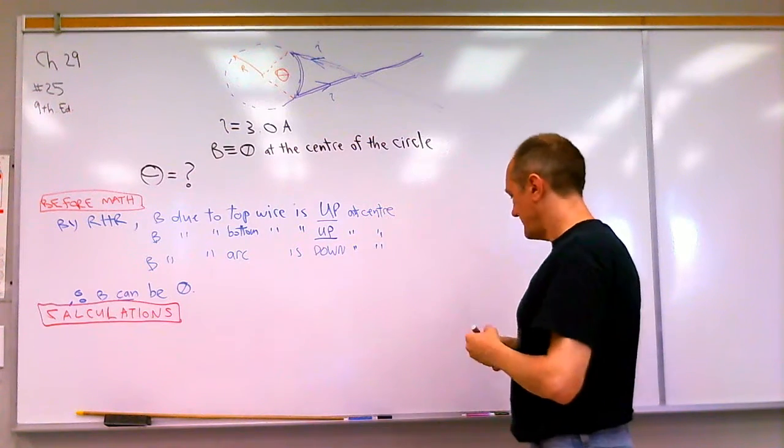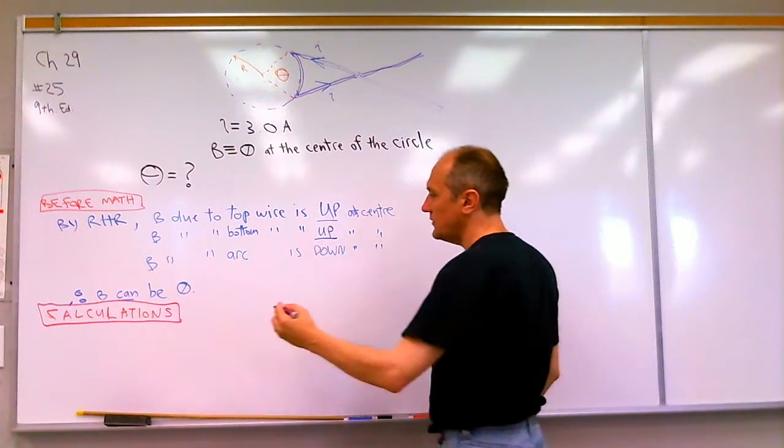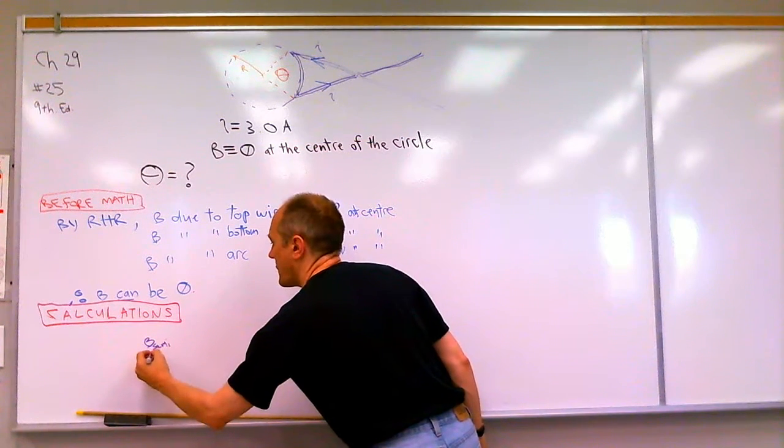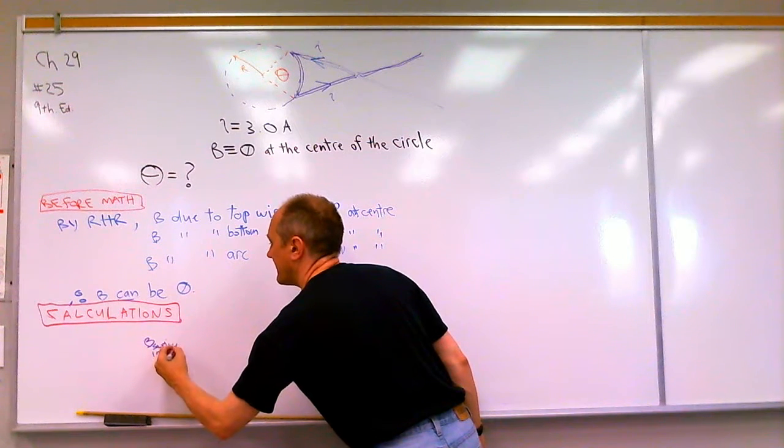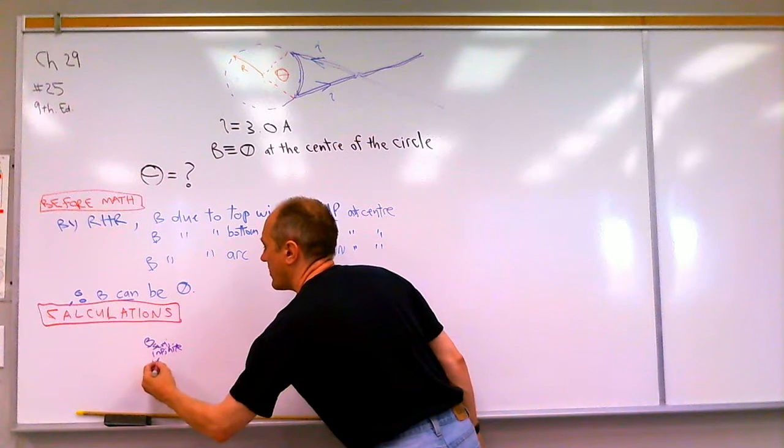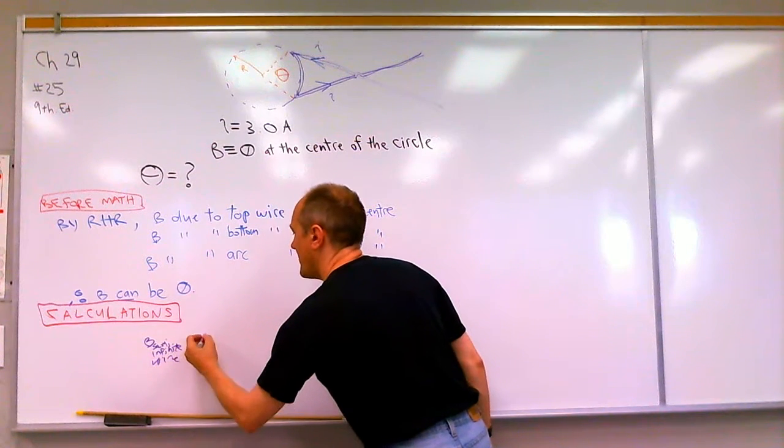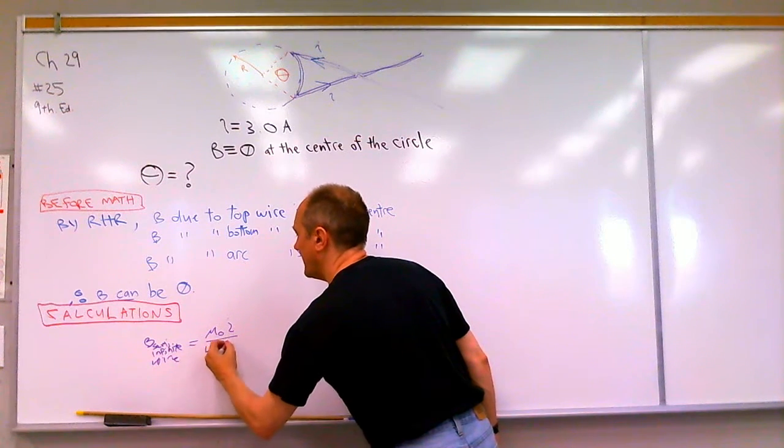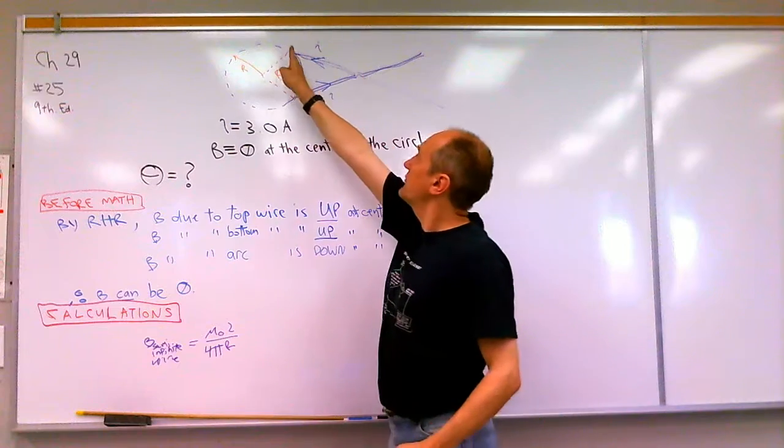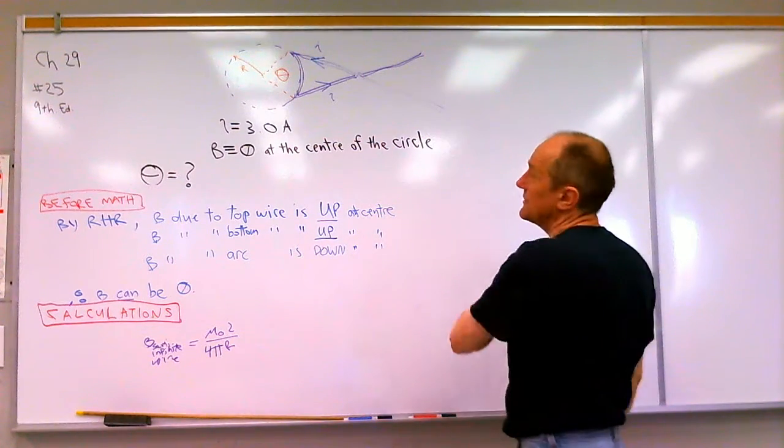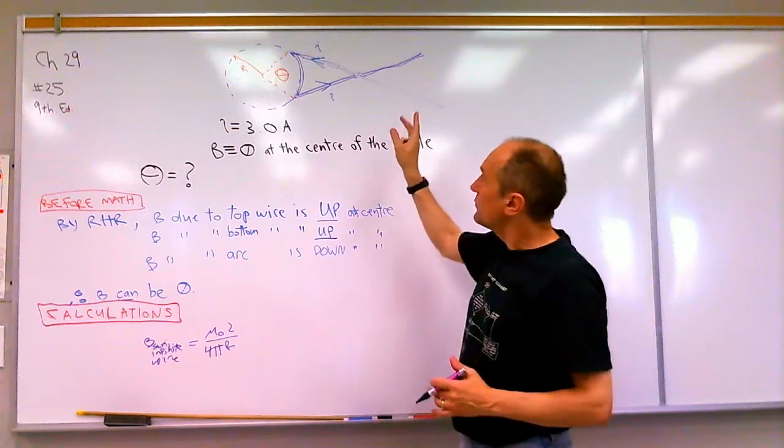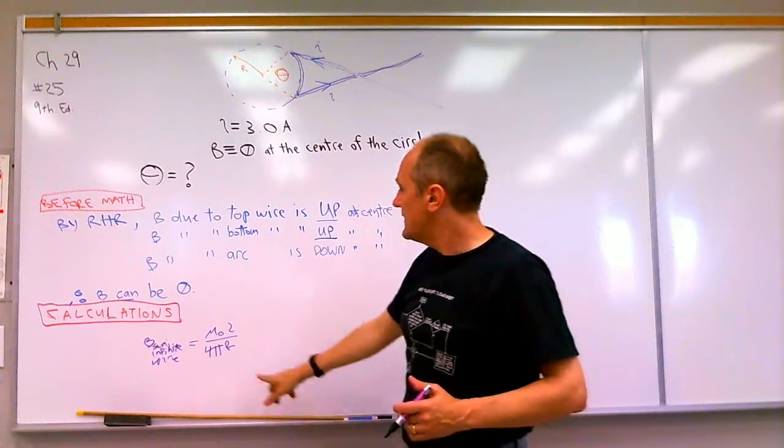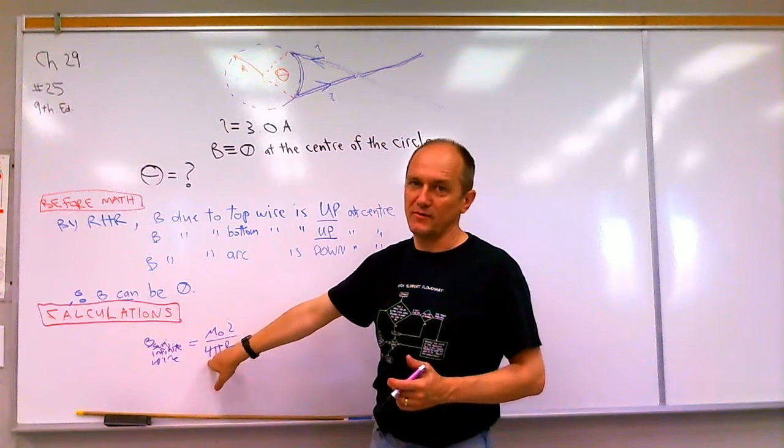So for the calculations, we have the field, due to a semi-infinite wire, is mu-naught i over 4 pi r. And semi-infinite means it comes from some point off to a very long distance, effectively infinity in one direction, but it stops. If it were an infinitely long wire, it would mean it continued on that way for a very long distance. And so in that case, this would become a 2 on the bottom instead of a 4.